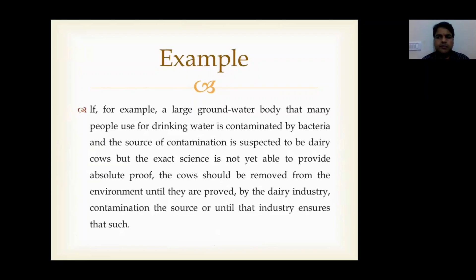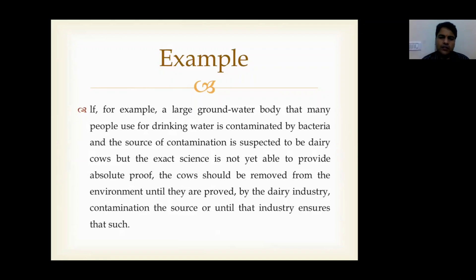To exemplify this in simple terms — if we take the example of a large groundwater source which many people are using for drinking purposes, and such water is contaminated by certain bacteria, but the exact science is not yet able to provide absolute proof of the source of contamination — in such cases, the contaminating source should be removed immediately, keeping in view the environment degradation and the contamination of water. It should not be awaited that full scientific reasons are still pending.